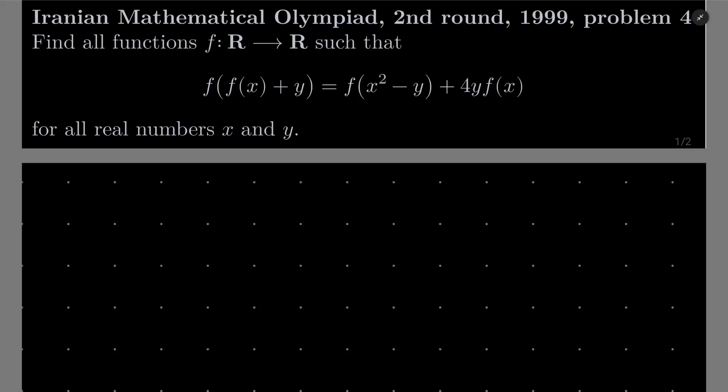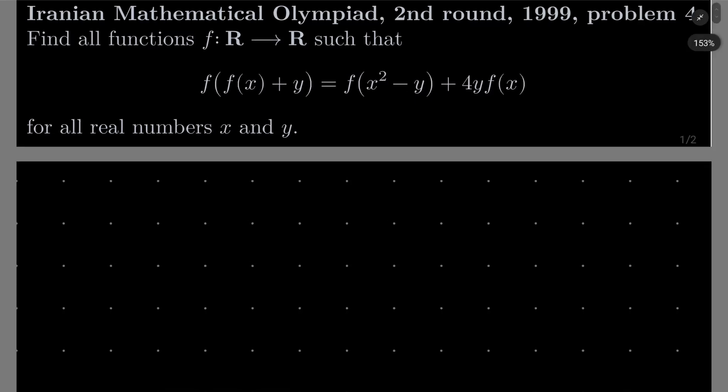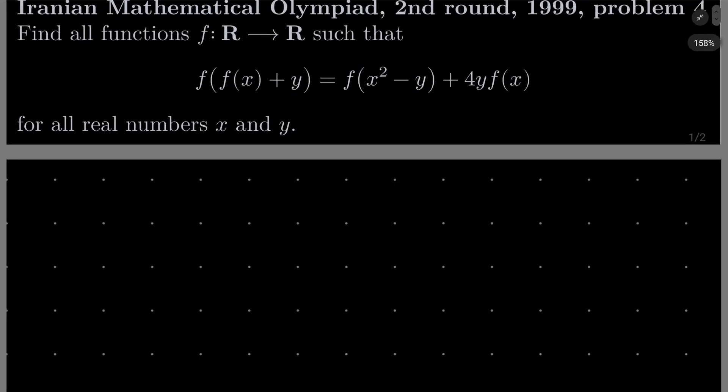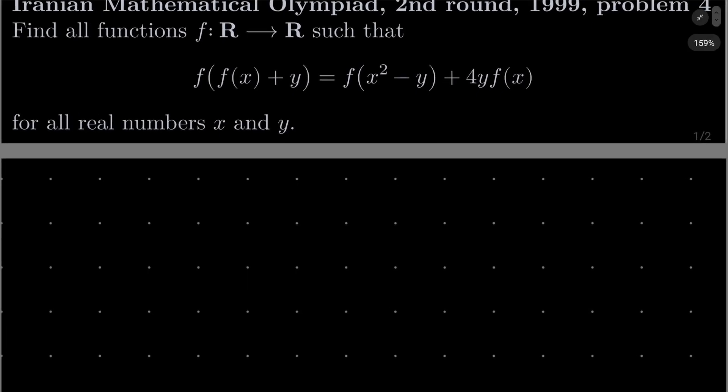Hello friends! In this video I'd like to solve the following problem from the Iranian Mathematical Olympiad, second round 1999, problem number 4. We wish to find all functions f from the set of real numbers into itself such that f of f of x plus y equals f of x squared minus y plus 4y f of x for all real numbers x and y.